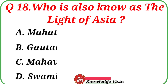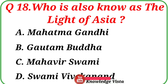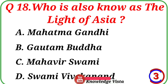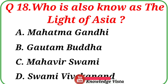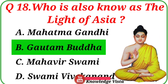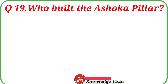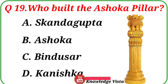Question number eighteen: Who is also known as the Light of Asia? Your options are: A. Mahatma Gandhi, B. Gautam Buddha, C. Mahavir Swami, D. Swami Vivekananda. Correct answer is option B, Gautam Buddha.